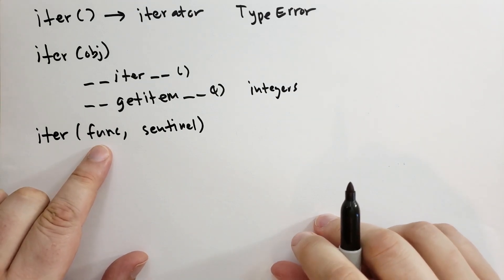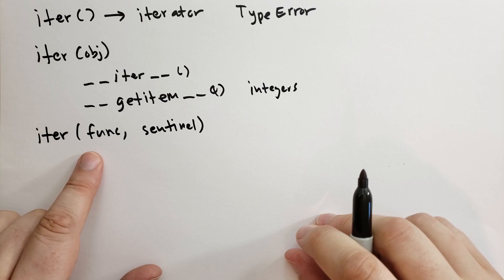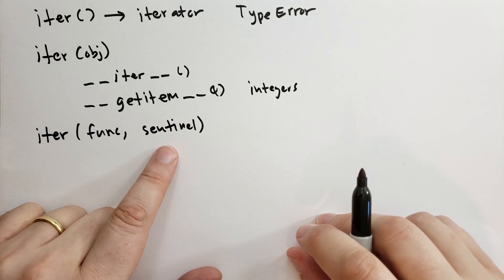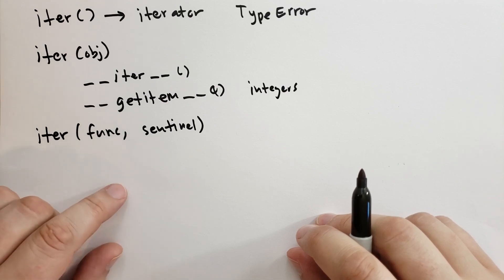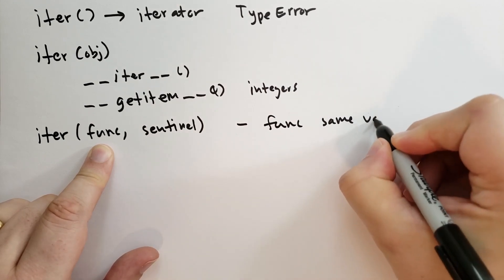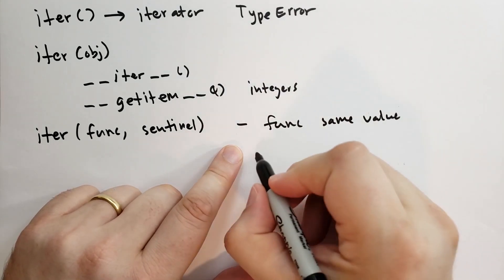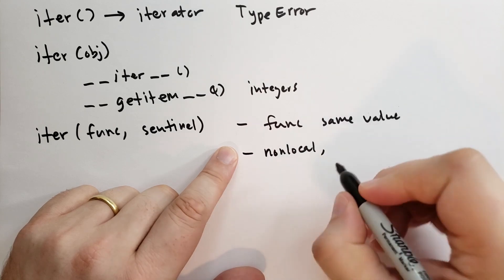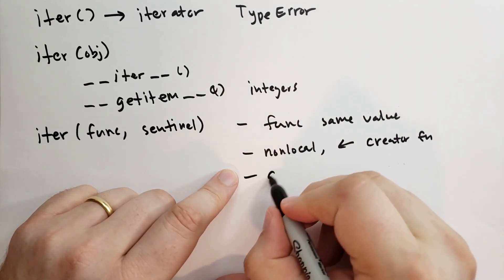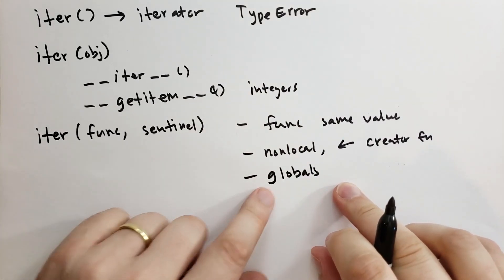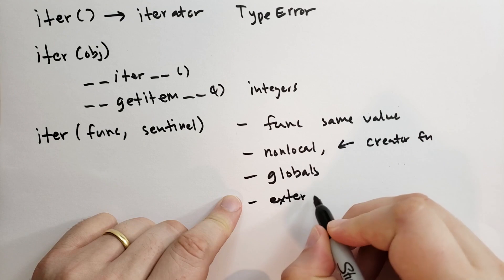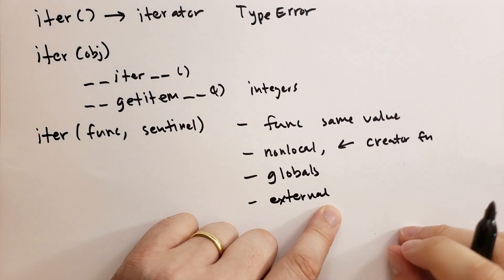You can also call iter with two parameters. The first parameter is a callable — a function — and the second parameter is a sentinel value. This iterator will continuously call the function for every item in the sequence until it sees the sentinel value returned, at which point it will raise StopIteration. A trivial example is a function that returns the same value. Maybe you rely on some non-local variable, or maybe it relies on globals. Or perhaps there's some external thing — a stream, a network socket, a file, an external program, a device.